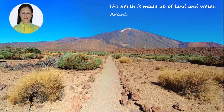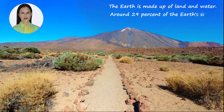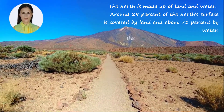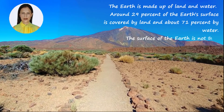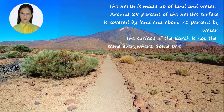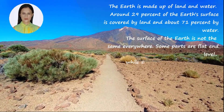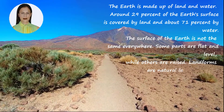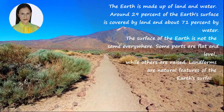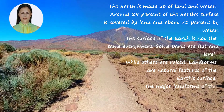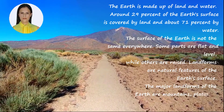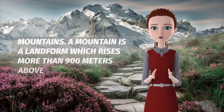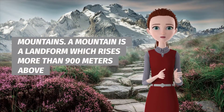Major Landforms — prithvi bhoomi aur jal se bani hai. Prithvi ki satah ka lagbhag 29 percent bhaag bhoomi se aur lagbhag 71 percent paani se dhaka hua hai. Prithvi ki satah har jagah ek jaisi nahi hoti — kuch bhaag flat aur level mein hote hain jabki kuch ucche aur uthe hue hote hain. Landforms prithvi ki satah ki prakritik visheshataen hoti hain. Prithvi ke pramukh landforms mountains, plateaus, plains, desert aur nadiyan hain.